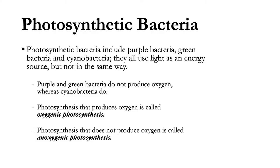Photosynthetic bacteria include purple bacteria, green bacteria, and cyanobacteria — this last group was erroneously referred to in the past as blue-green algae. Although all three groups use light as an energy source, they do not all carry out photosynthesis in the same way. Purple and green bacteria do not produce oxygen (anoxygenic photosynthesis), whereas cyanobacteria do (oxygenic photosynthesis).